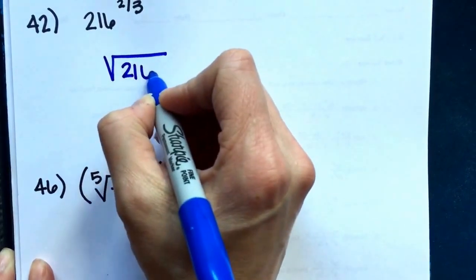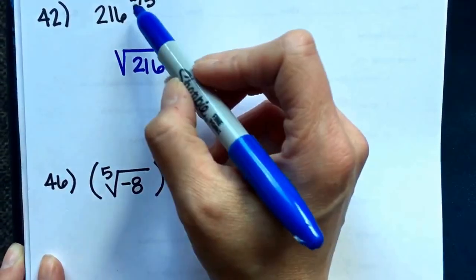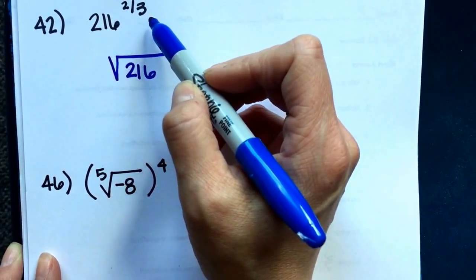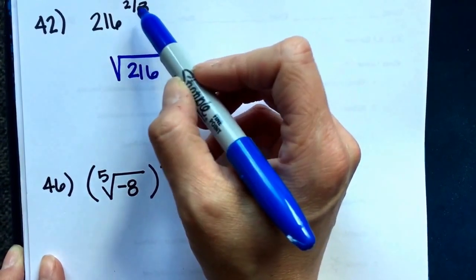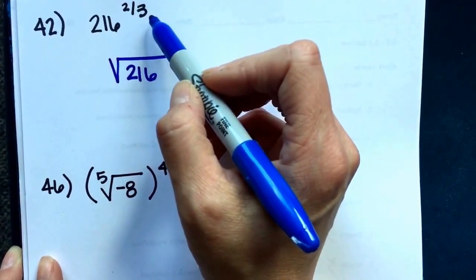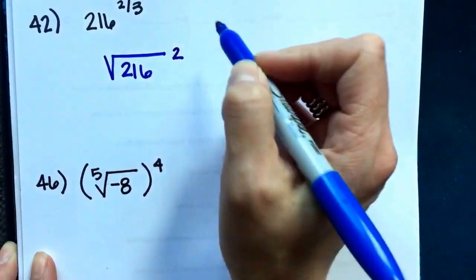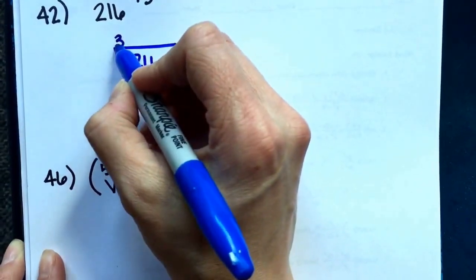So it's a root. The base 216 goes on the inside. Now you have a 2 and a 3. For the exponent, we need to decide one of them is the root and one of them is the exponent. Remember it's power over root, always power over root. 2 is the exponent, 3 is the root.